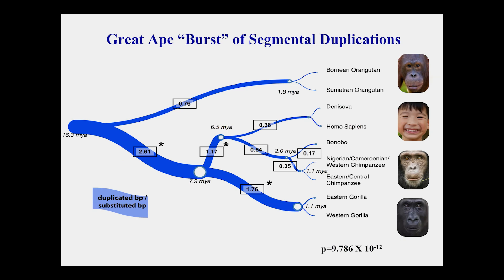Something we still don't have a good explanation for is that the rate of accumulation of fixed duplications is non-uniform across different branches. This phylogenetic tree shows the thickness of the line as the number of fixed duplicated bases added per substituted single nucleotide base on each branch. There seems to be a huge excess in the common ancestral lineage leading to humans, chimps, and gorillas — for every base pair mutated, 2.6 bases became copy number variable, largely through duplication. Duplications have reshaped the genomes of humans, chimps, and gorillas.